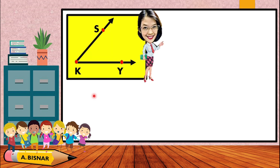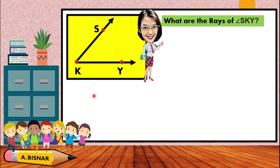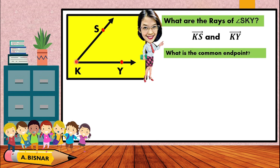For example, given angle SKY, what are the rays? That's correct — we have ray KS and ray KY. Again, when naming a ray, you must start with the endpoint. The common endpoint is point K.